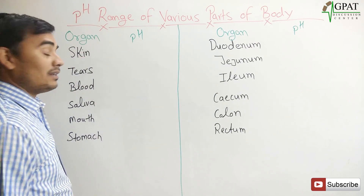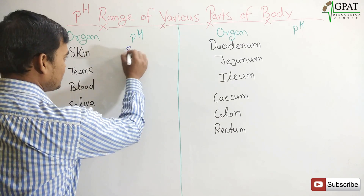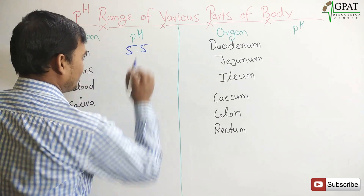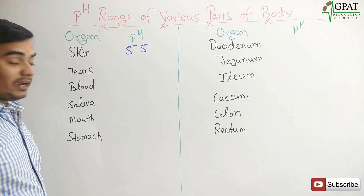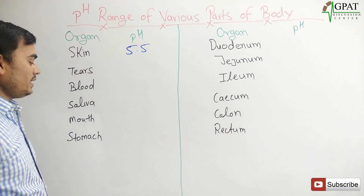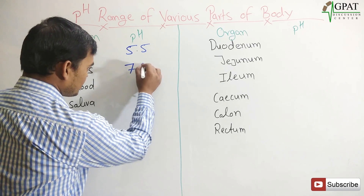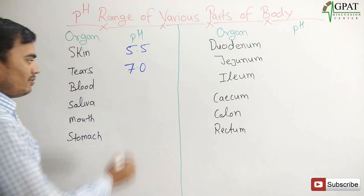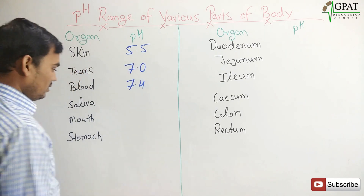Skin: the pH range of skin is 5.5. Next, the pH of tears is 7. The pH of blood is 7.4.